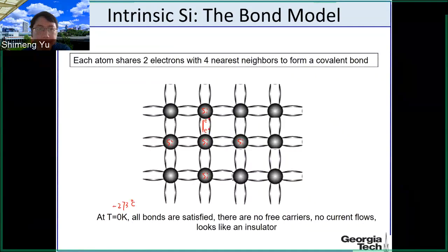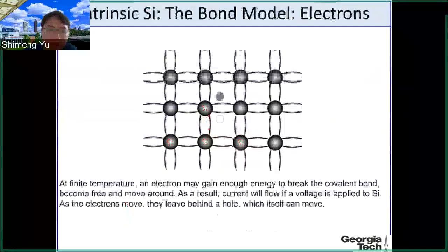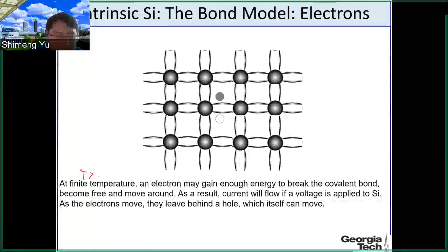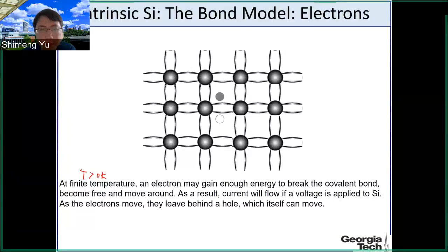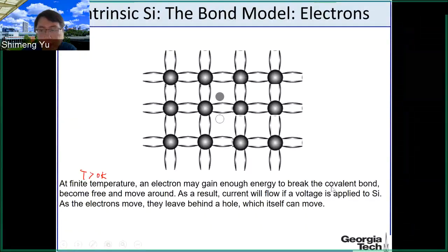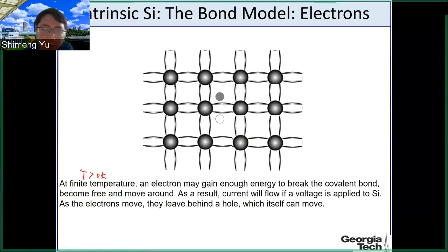Now consider finite temperature — T greater than 0 Kelvin. At higher temperature, the thermal energy may vibrate the electrons, and they may get enough kinetic energy to break the covalent bond. That means this bond has some probability to be broken. Once the bond is broken, we release — for example — one electron here.